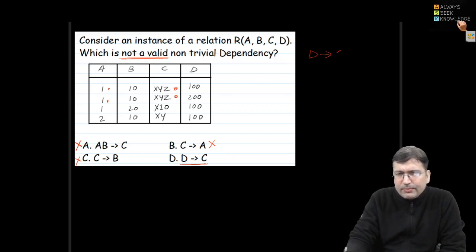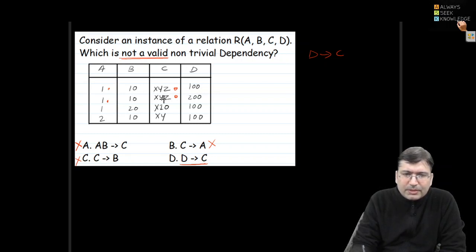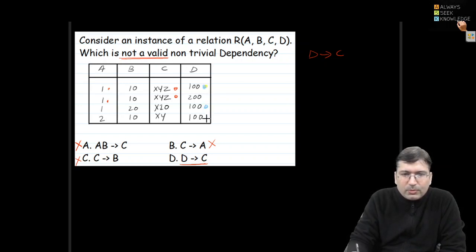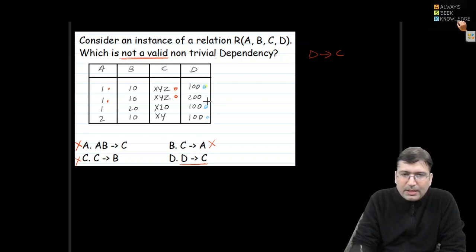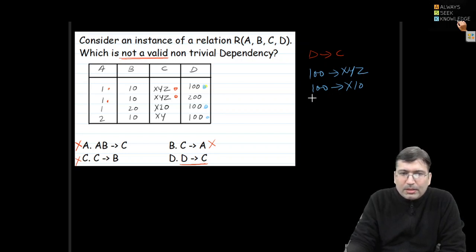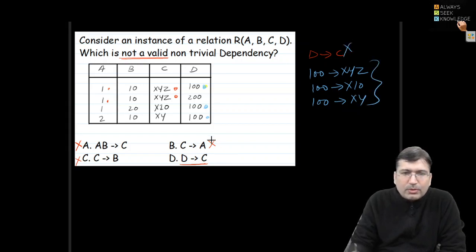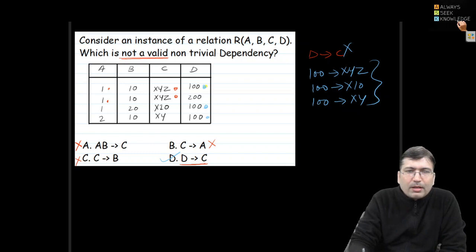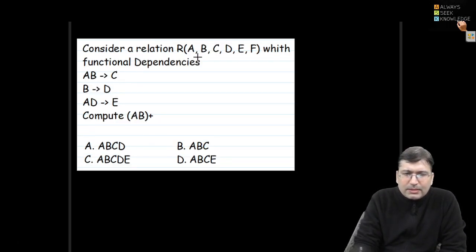To verify why D is the invalid functional dependency: D implies C means 100 should map consistently. There are three occurrences of 100. The first maps to XY, the next to X10, and the third to XY again — different mappings for the same value of D. This violates the functional dependency, so the answer is D.